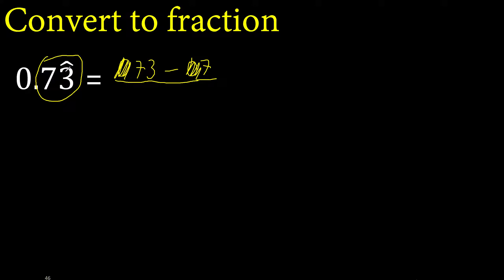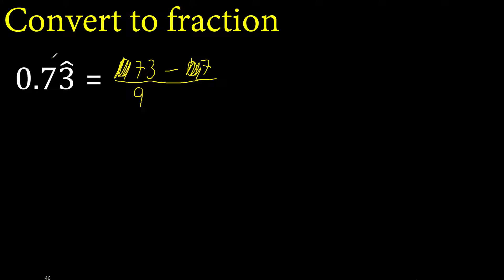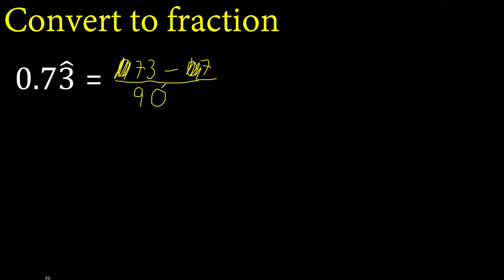After the point, there is one number under the symbol — therefore 9, always 9. One number, 9, one time. After the point, there is one number outside the symbol — therefore 0, always 0. One number, 0, one time.